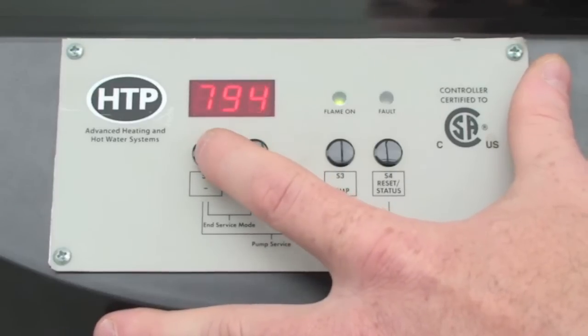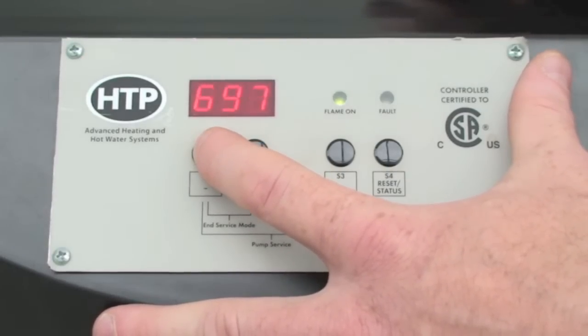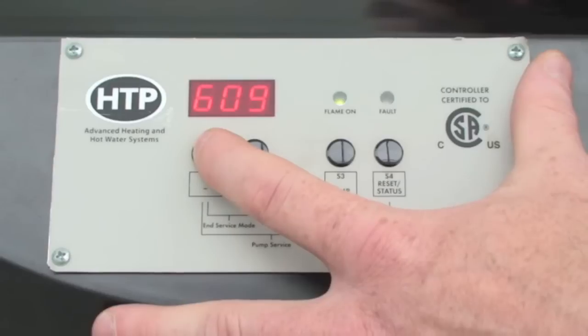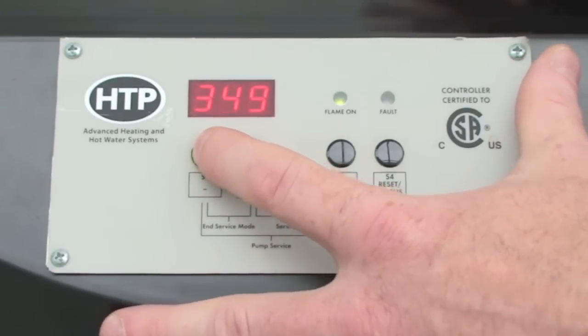Once we have that information, we utilize the S1 minus key to bring the fan speed down to its lowest firing rate. We can get this information, record our CO and CO2 levels, and the combustion testing is done.